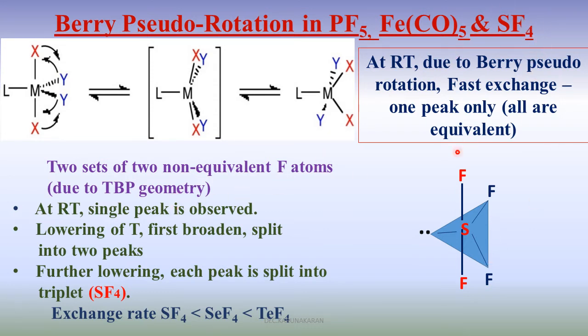The structure of SF4 is obtained from NMR. For example, at room temperature, a single peak is observed because of constant exchange of axial and equatorial positions, they are equivalent. All the fluorine atoms are equal.